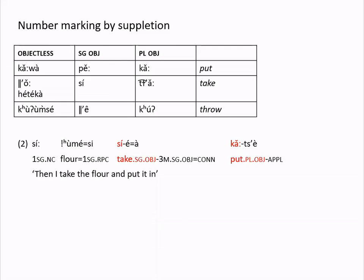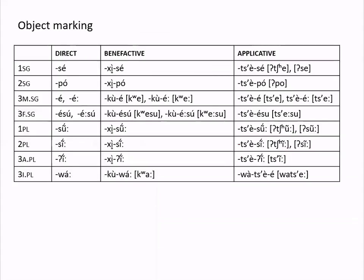Sandawe has a series of object agreement morphemes — three sets — that all show person, number, and gender, and for third person plural they also show animacy. There's a basic set for a direct object, a benefactive series, and an applicative series. The benefactive series includes a morpheme before first and second person objects and before third person objects. The applicatives are analyzed as including the applicative morpheme te for all persons, although it is reduced or assimilated in different ways for most persons.